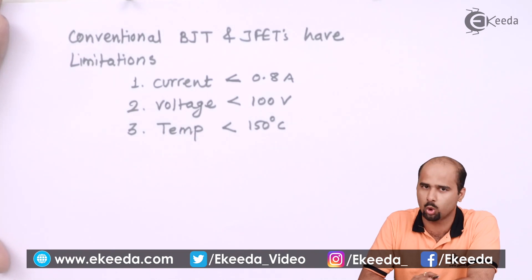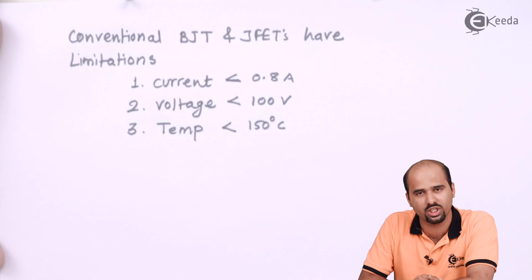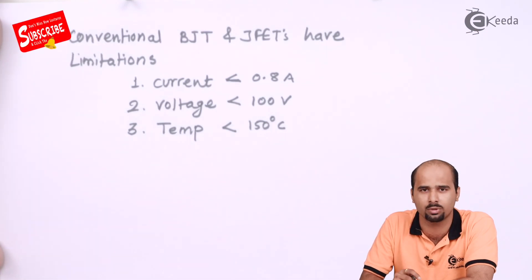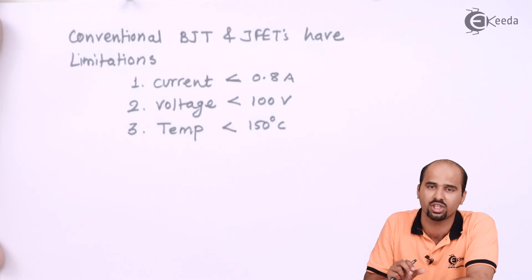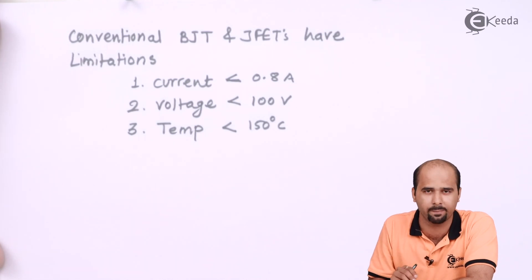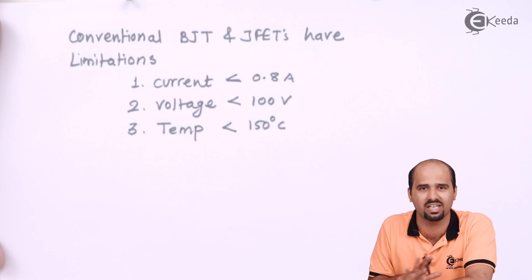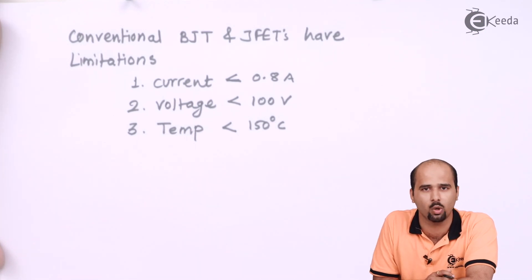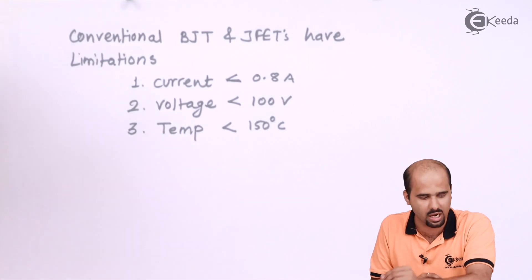Now, why is this called a large signal amplifier? In BJT and FET voltage amplifiers, we handle small amounts of voltage and current, and the Q-point varies in a very small range because changes in temperature, voltage, and current are not significantly large. But in a power amplifier, the range of voltage, current, and temperature is much larger — so the signal we consider is a large signal. That is why this analysis is called large signal analysis, and this amplifier is called a large signal amplifier.